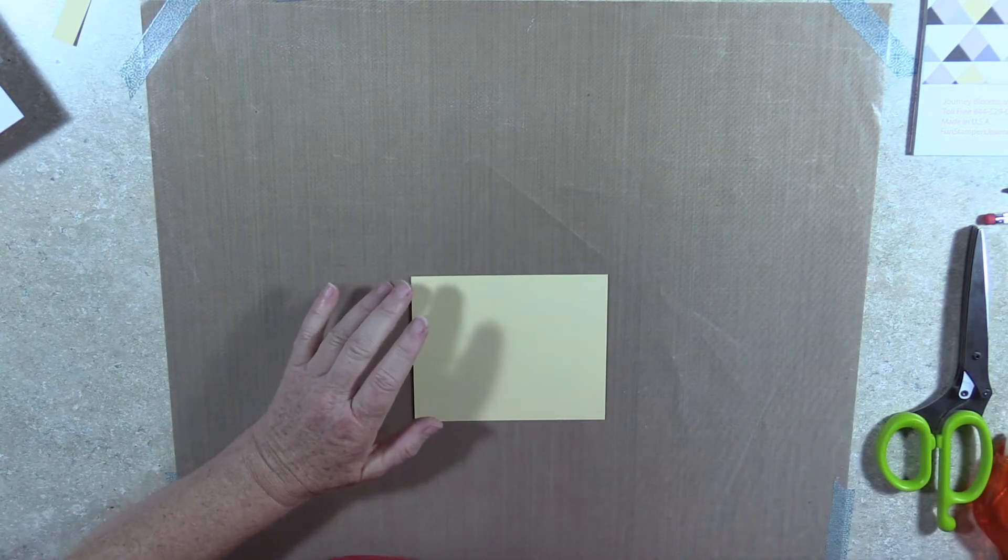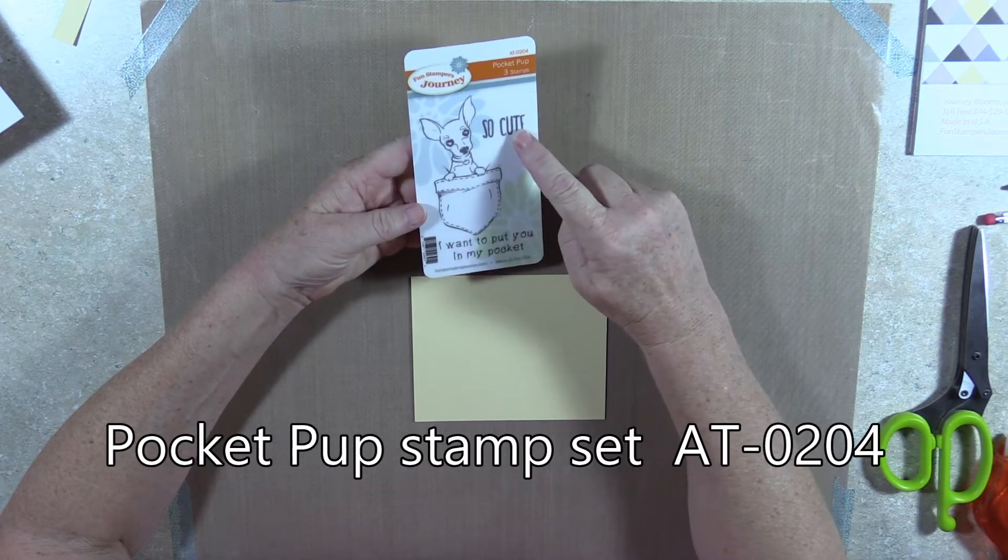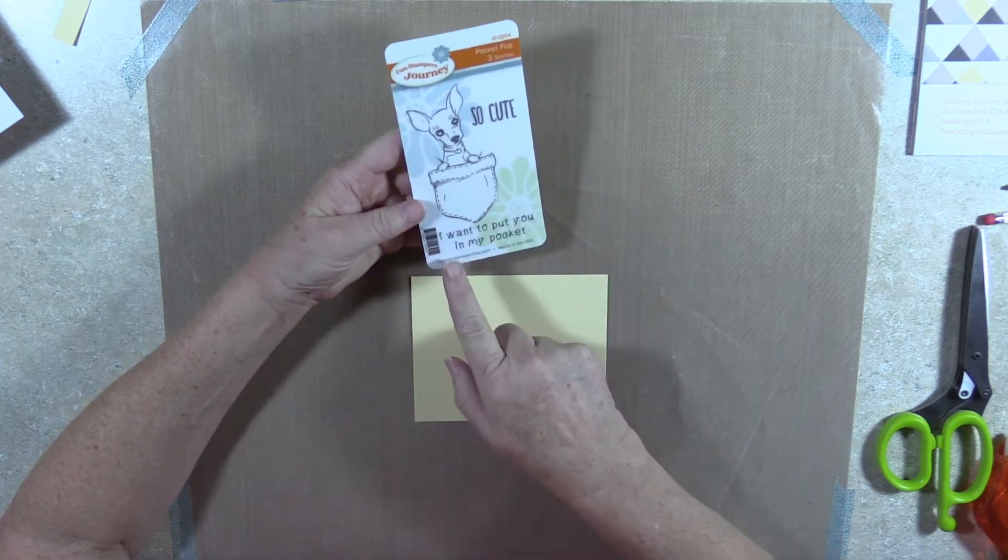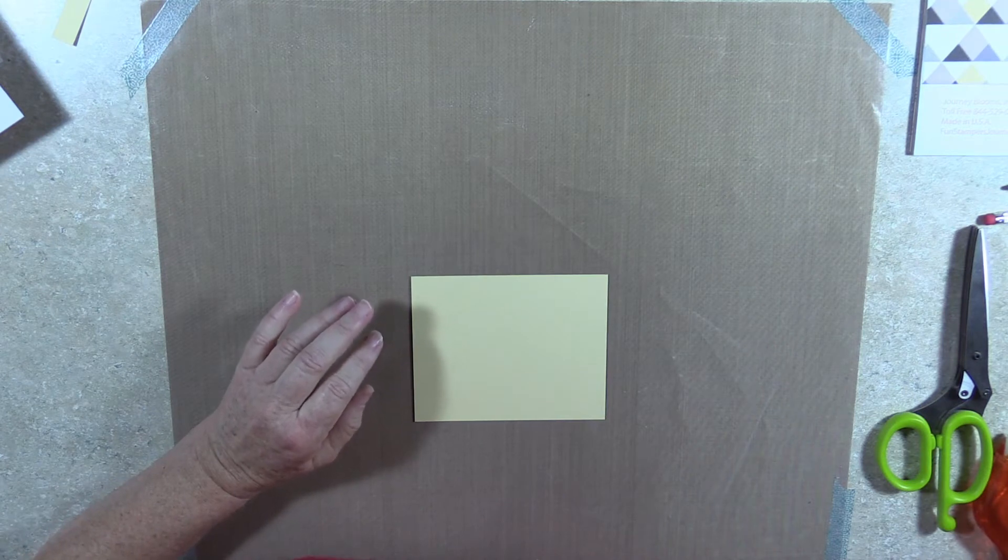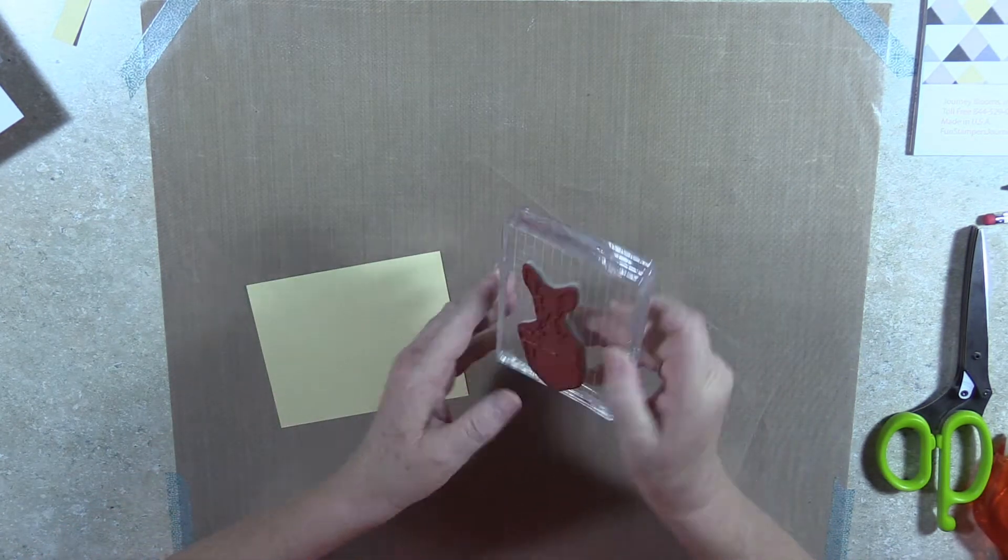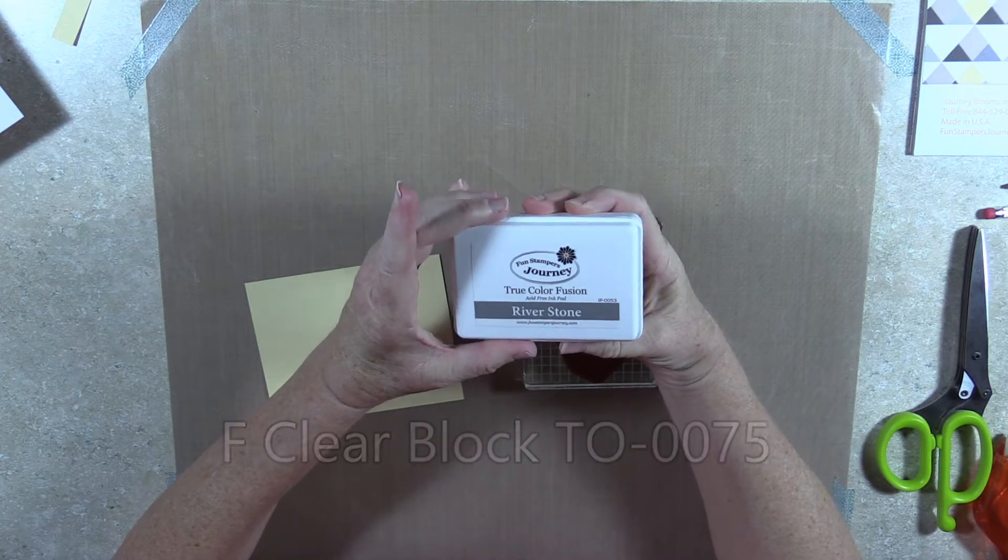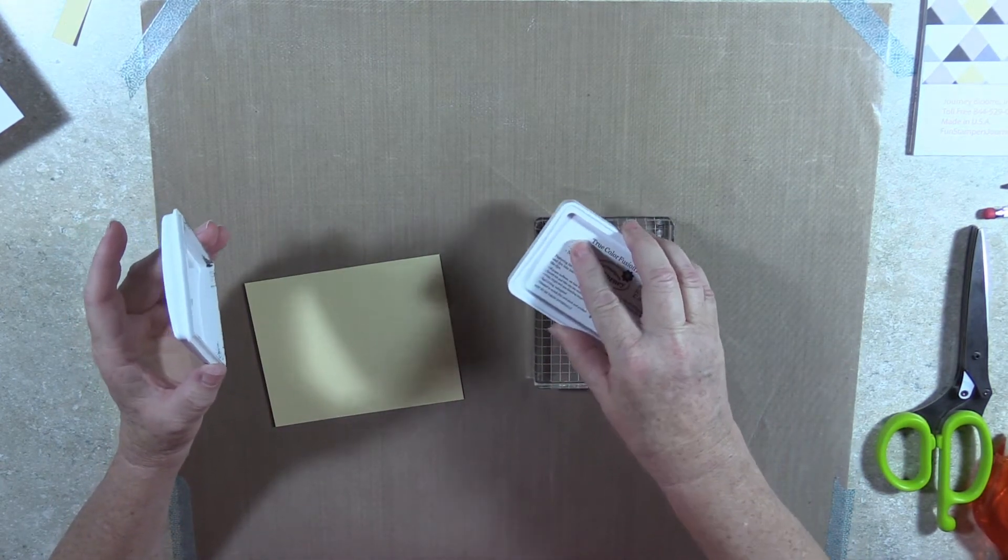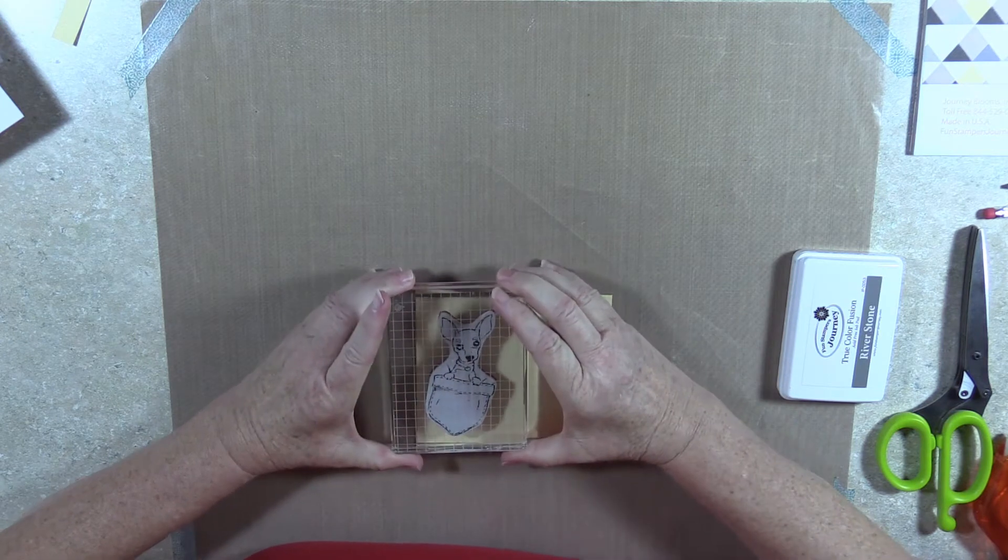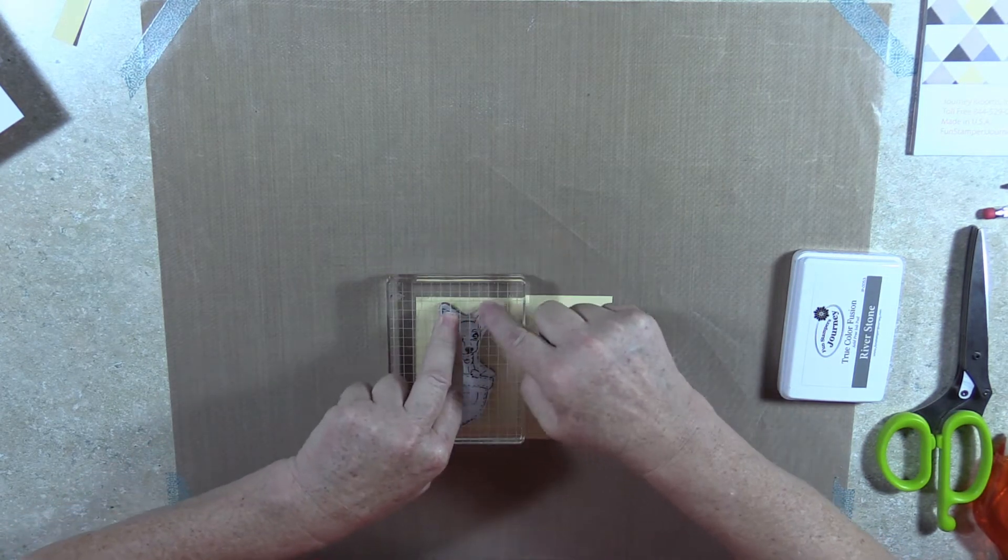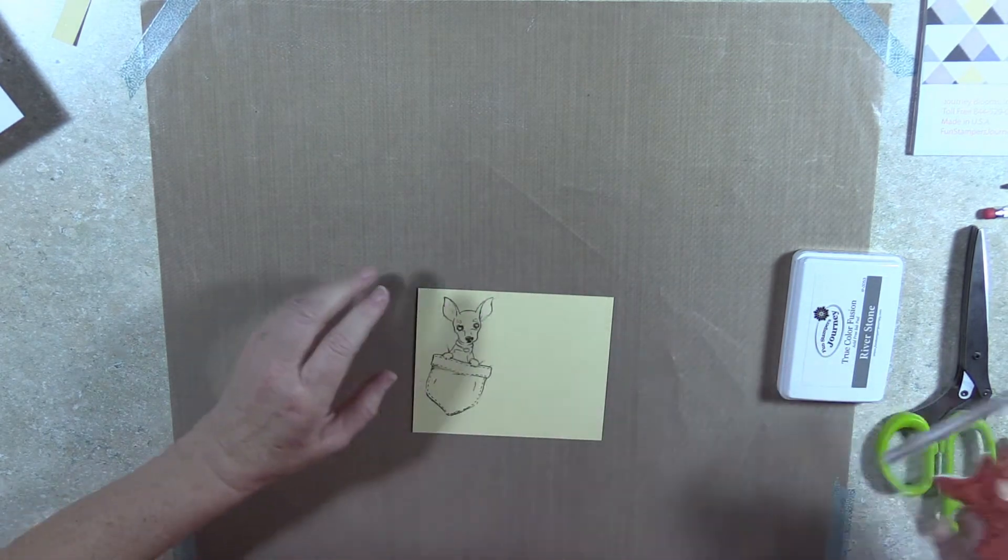We're going to stamp our little puppy. And it's this stamp, it's called Pocket Pup. We'll be using the So Cute Sentiment and the puppy. The other one we're not using, but it's I want to put you in my pocket, which is just an adorable stamp set. Here I have it on my F block, and we're using Riverstone True Color Fusion ink. We're going to put this fairly close, the ears fairly close to the top and towards the left side. There we go, little puppy.